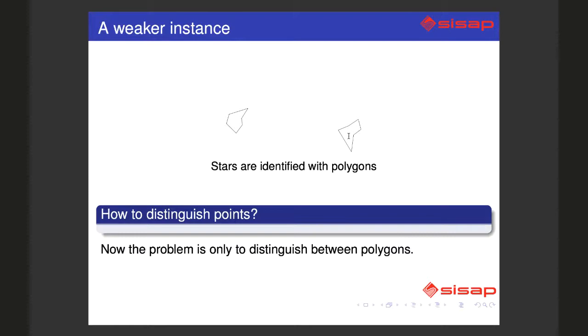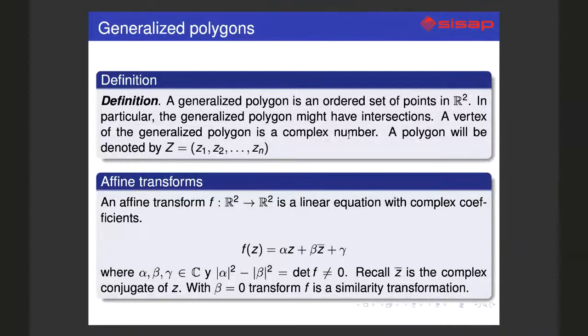Formally, what we have is a polygon. We are defining here what is a generalized polygon. This is only an ordered set of points, and the points will be represented as complex numbers. The polygon capital C is just a collection of complex numbers.